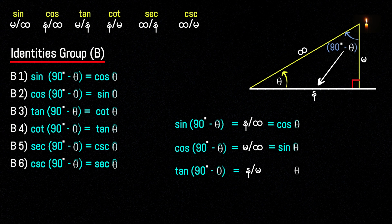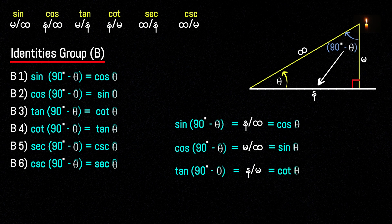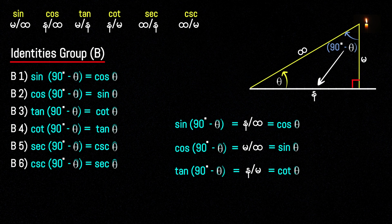So if theta needs to be expressed as a cosine, then tangent of 90 degrees minus theta equals cotangent. So the theta needs to be expressed in terms of cos.